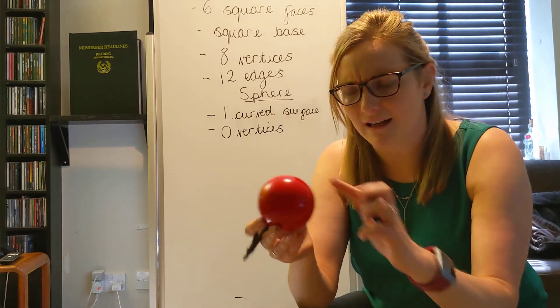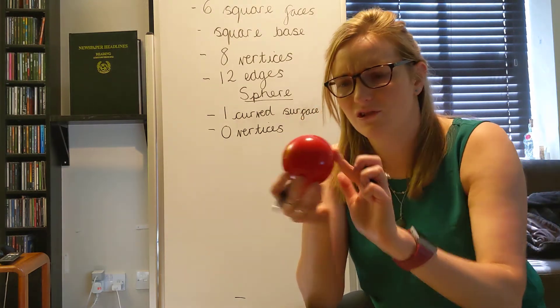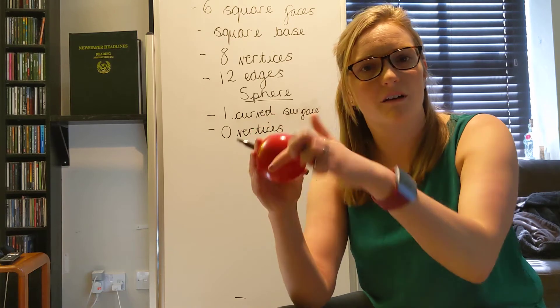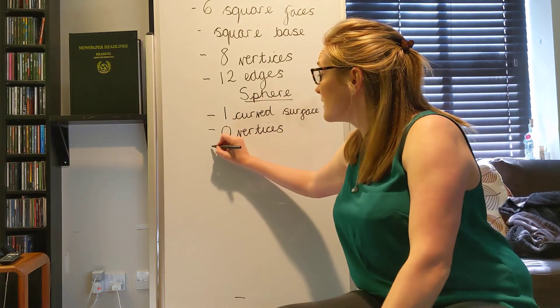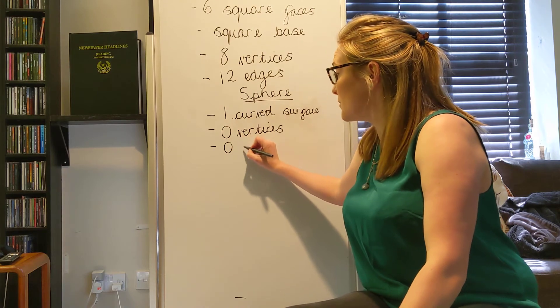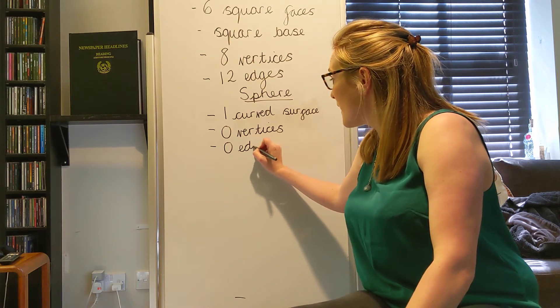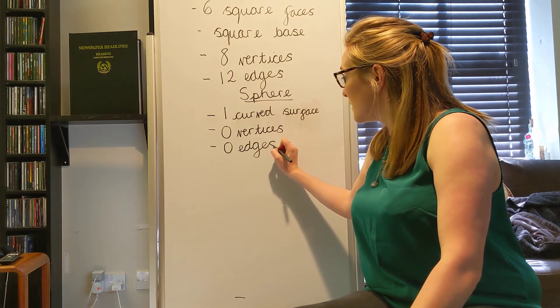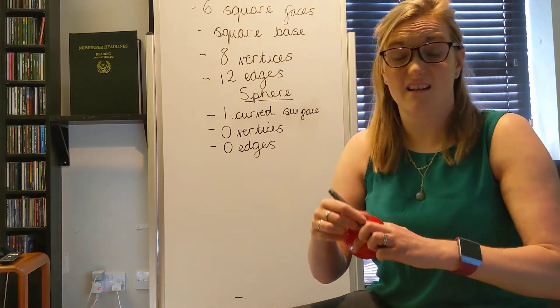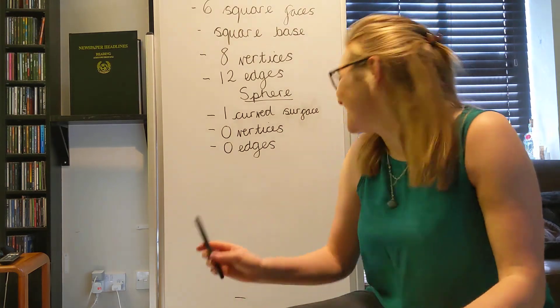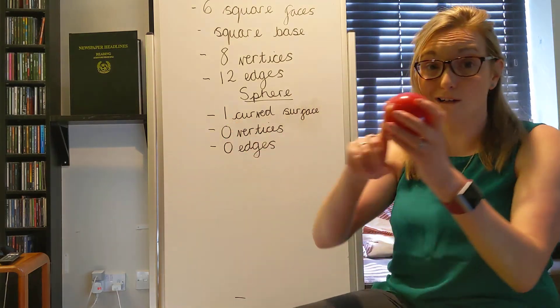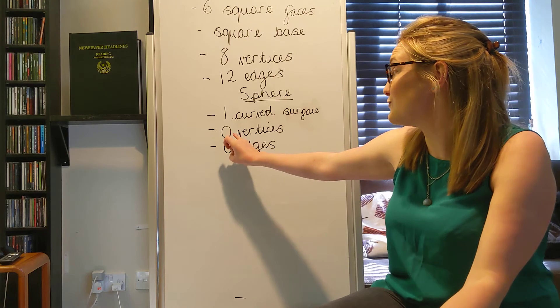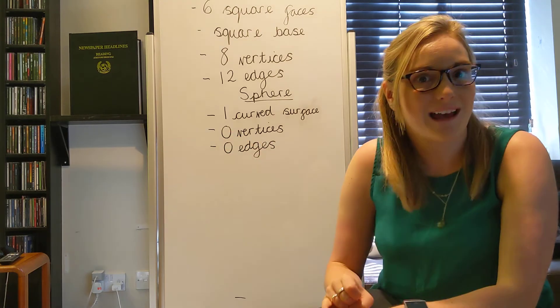And if there's no vertices, there's no sharp bit for me to run my fingers on. So there's no edges. You're right. No or zero edges. So a sphere, I just said sphere. So a sphere is very easy to remember some of the facts. There's one curved surface and there's no vertices and no edges.